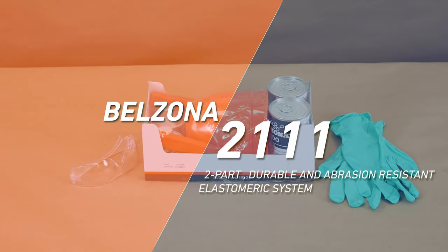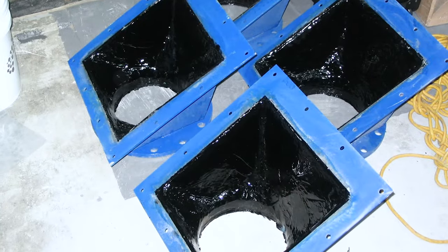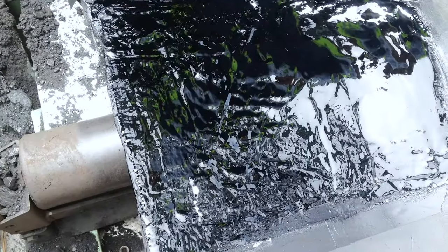Belzona 2111 is a durable and abrasion resistant system designed for rebuilding, repairing and resurfacing elastomeric or metal components.